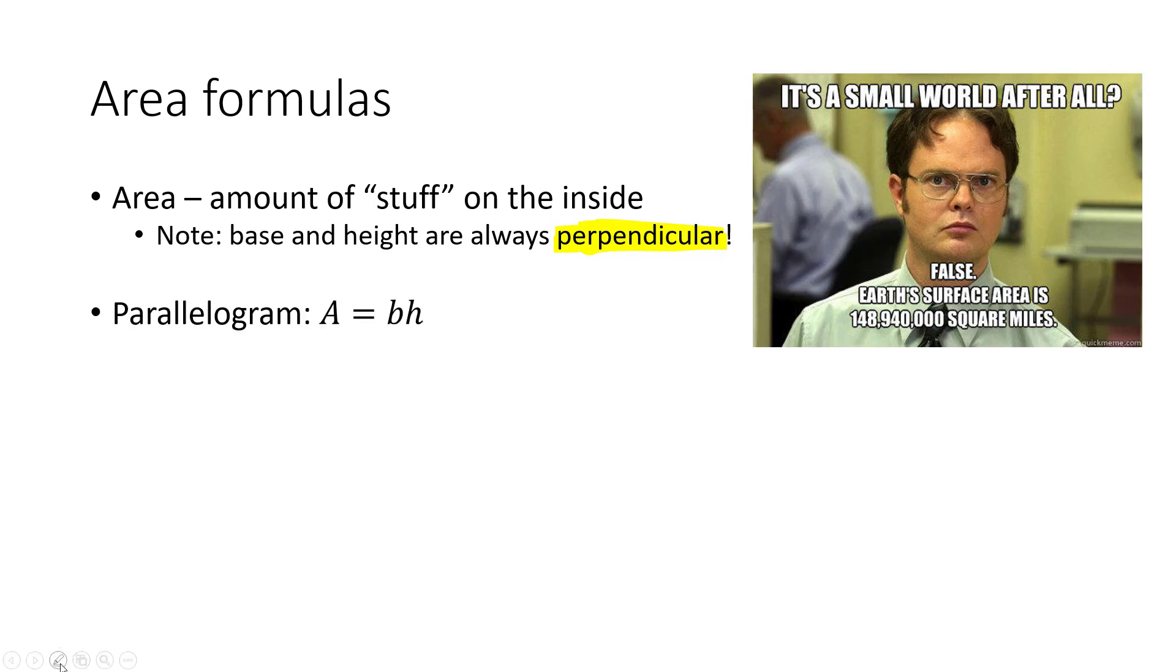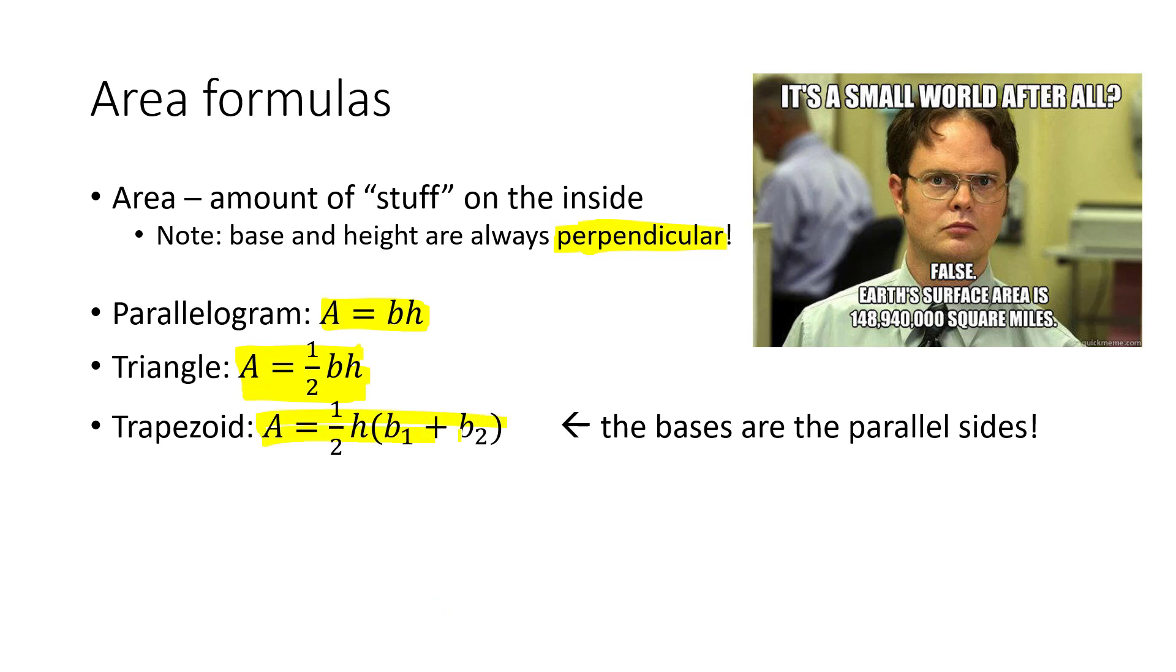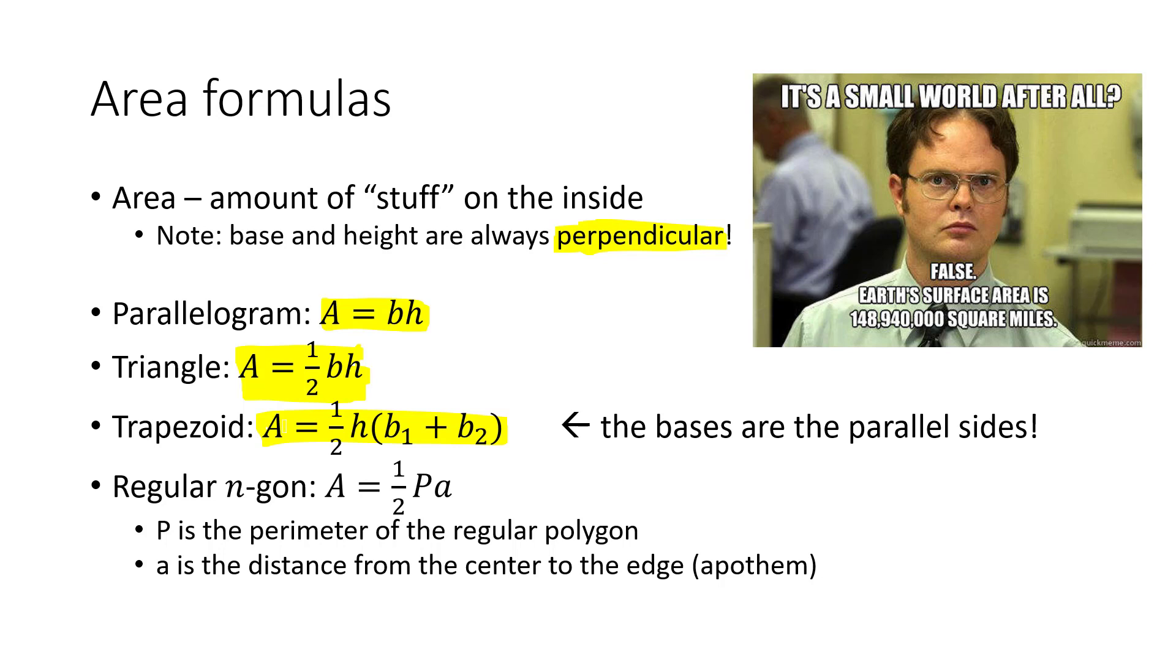Some formulas, good formulas to know. A parallelogram, area is equal to the base times the height. Triangle, area is equal to one half of the base times the height. Trapezoid, area is equal to one half times the height times the sum of the bases. And a trapezoid has two parallel sides. Those are the two bases and the height is perpendicular to both of them. In fact, we can do any regular polygon as one half times P times a. P is the perimeter of the polygon and a is what we call the apothem. It's kind of like the radius. It goes from the center to the edge of one of the sides. It's a perpendicular bisector of one of the sides through the center.